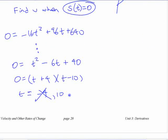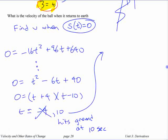10 seconds. At 10 seconds is when it hits the ground, right? Hits ground at 10 seconds. Then use that number. Okay, use that number. 10 seconds. Put that number into the velocity and you'll find out what the velocity is.